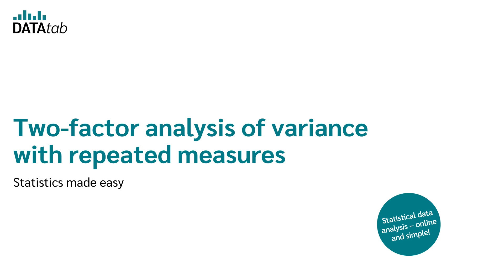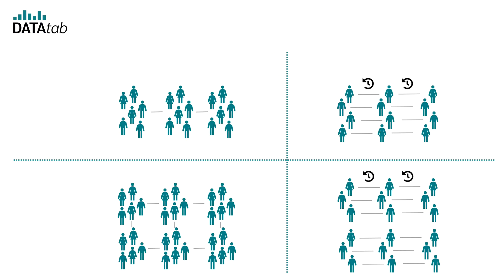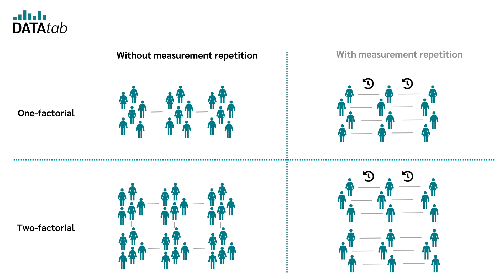This video is about two-factor analysis of variance with repeated measures. Looking at the most common types of analysis of variance, we distinguish between one-factor and two-factor analysis of variance, and between analysis of variance without measurement repetition and with measurement repetition. This video focuses on the two-factor analysis of variance with measurement repetition.